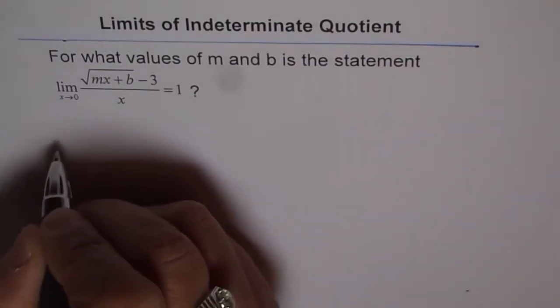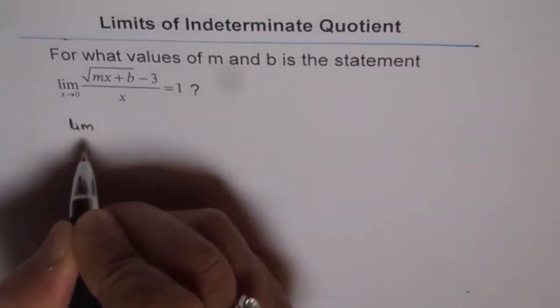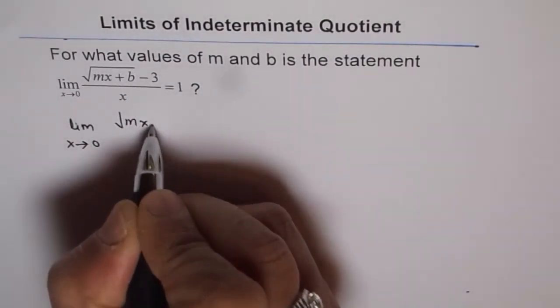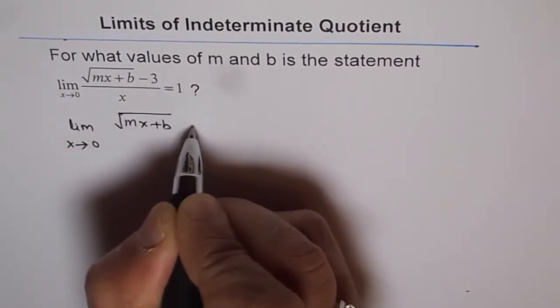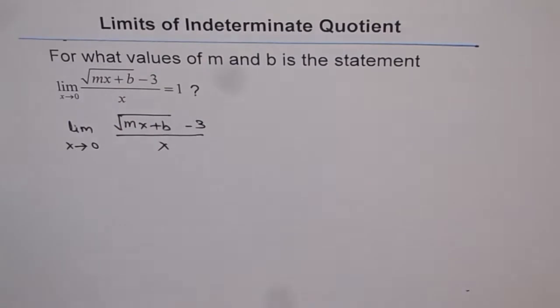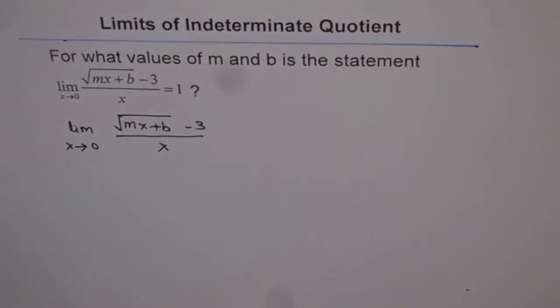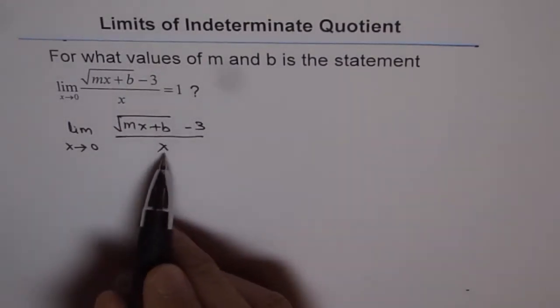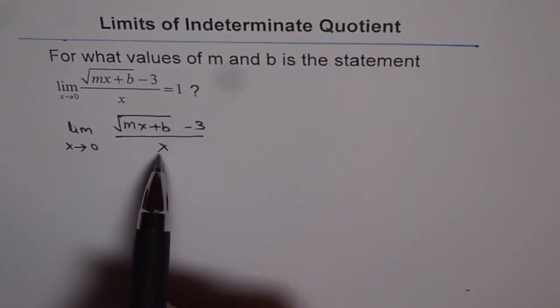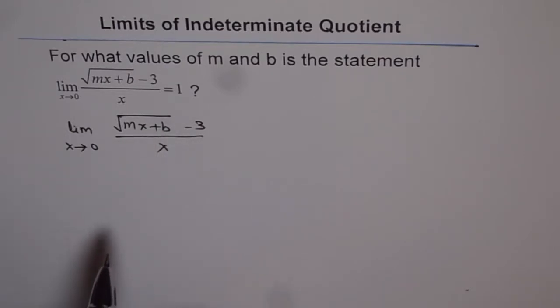So let's analyze this. What we need is limit x approaches 0 for mx plus b minus 3 over x equals to 1. That means first thing is, limit exists. Now if I put x equals to 0, then we get 0 in the denominator. Limit can exist only if we also get 0 in the numerator. So we have a form 0 over 0, and then there is a possibility of limit.